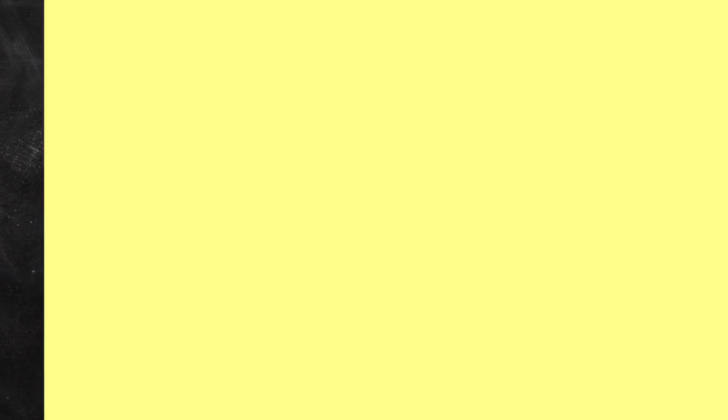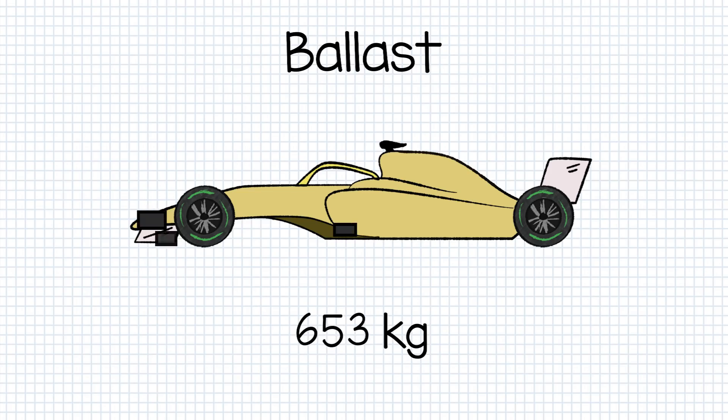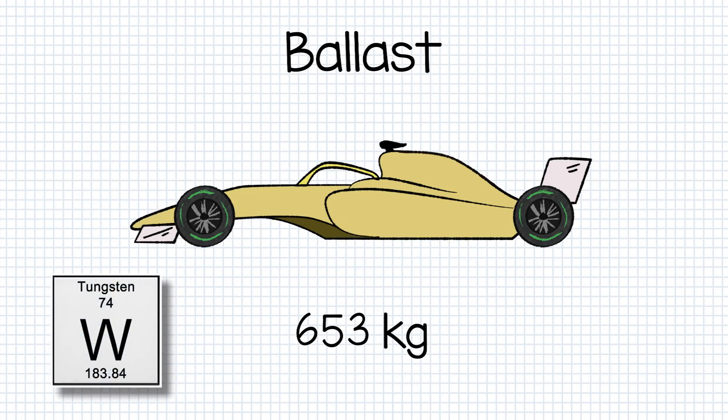Cars are built as underweight as possible and then brought up to the minimum weight via ballast. Ballast is the term given to heavy material strategically placed around the cars for stability. Ships and aeroplanes also use ballast. Often heavy metals like tungsten are used for this purpose. As they are so dense, very heavy masses can be placed precisely without taking up room.